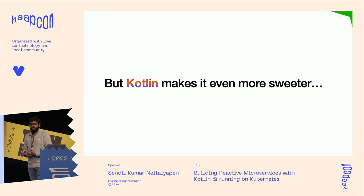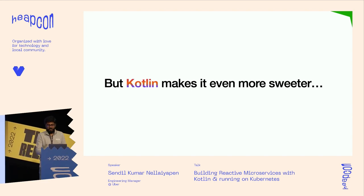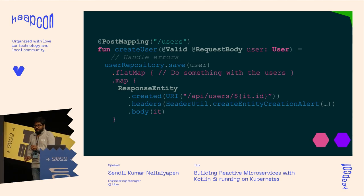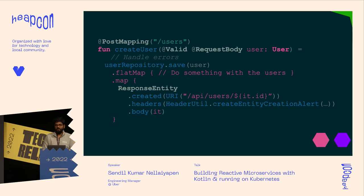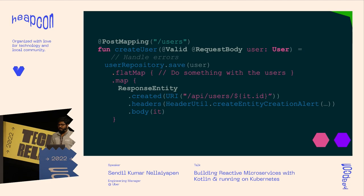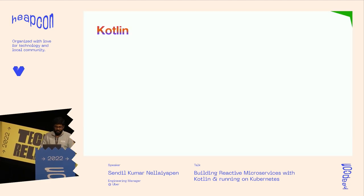Kotlin makes it much sweeter because it has a very concise syntax. The same code in Kotlin — you can see the fun keyword, and I haven't specified the return value explicitly because Kotlin automatically infers it. The syntactic sugar shown in pink on the slide makes the code much cleaner and smaller, depending on your perspective. Kotlin is awesome and everybody loves it.